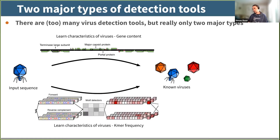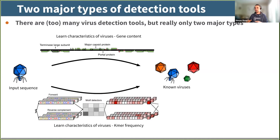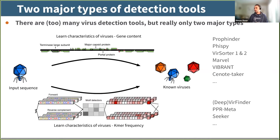We do have alternatives that exist. The idea is to do the same thing, except we try to identify what a virus looks like purely based on the DNA sequence — forget about genes. Just from the raw DNA sequence, trying to find patterns that would be signatures of viruses. There are many different tools that do both approaches.